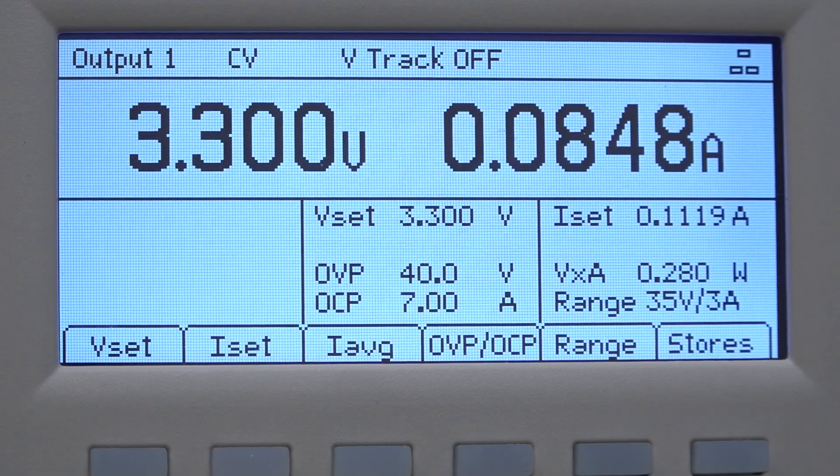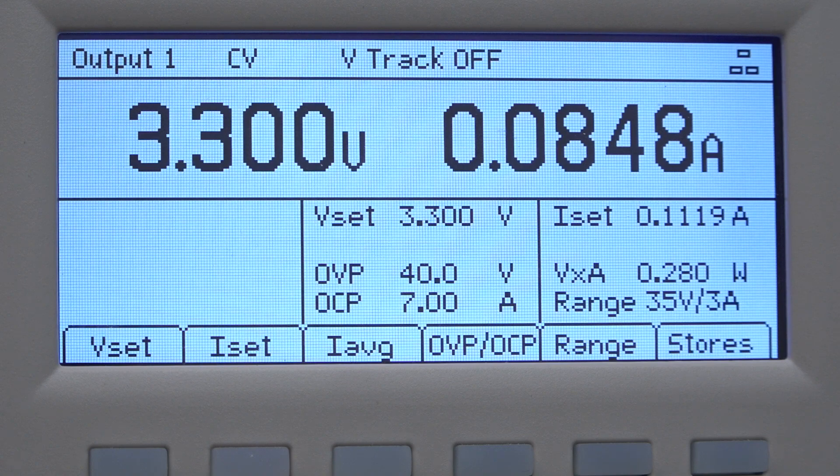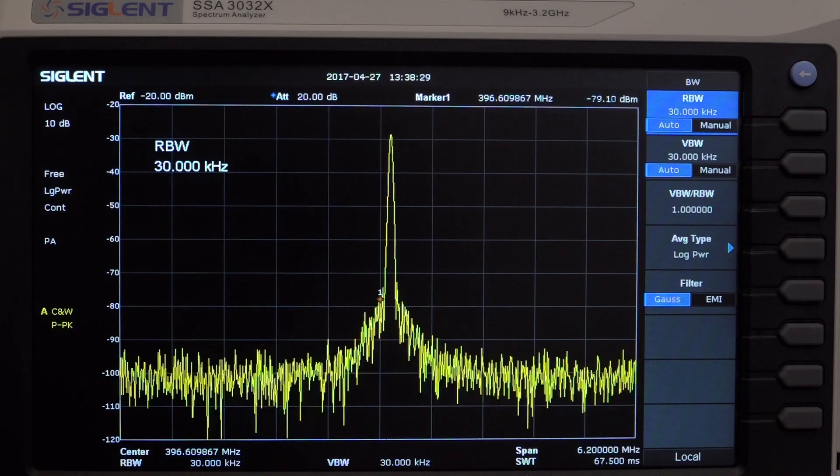The circuit draws a surprising .28 watts of power, which is enough to heat the chip up over 60 degrees C. I found that blowing on the hot potato chip was enough to speed it up by several MHz.